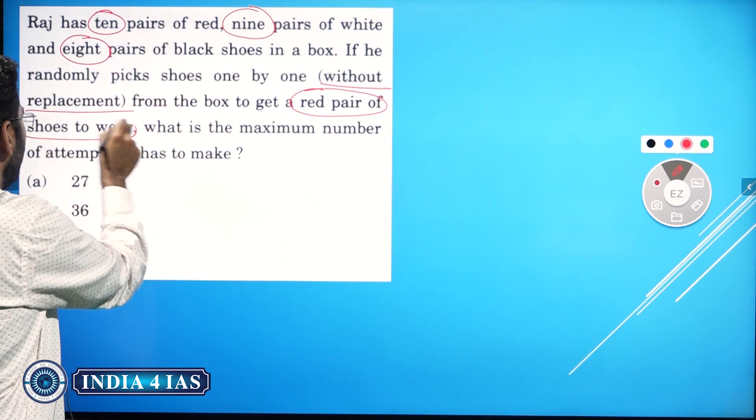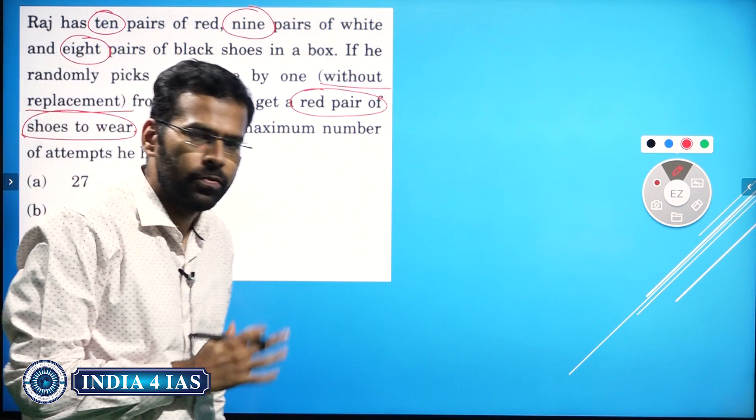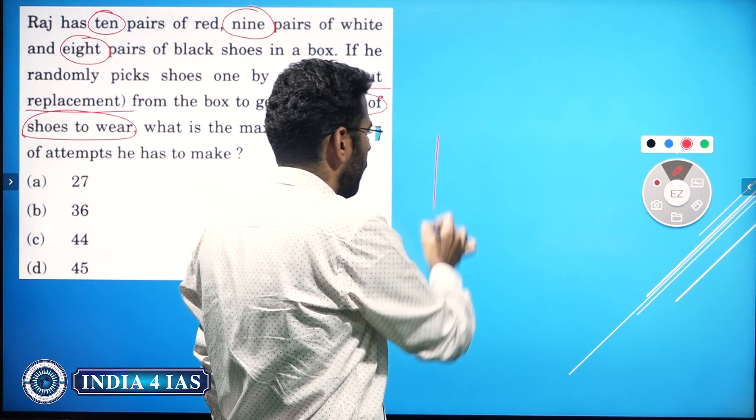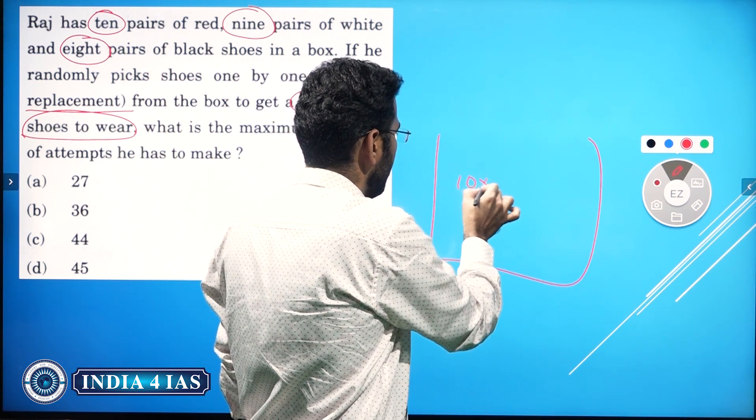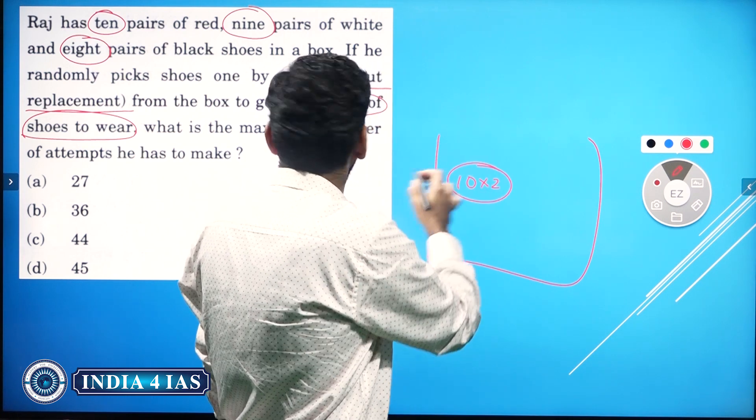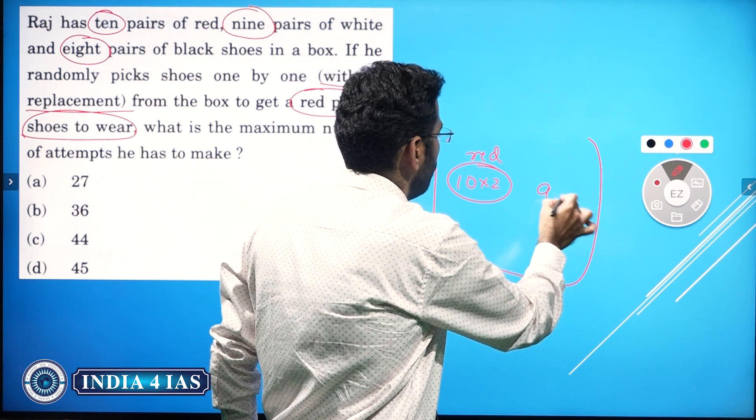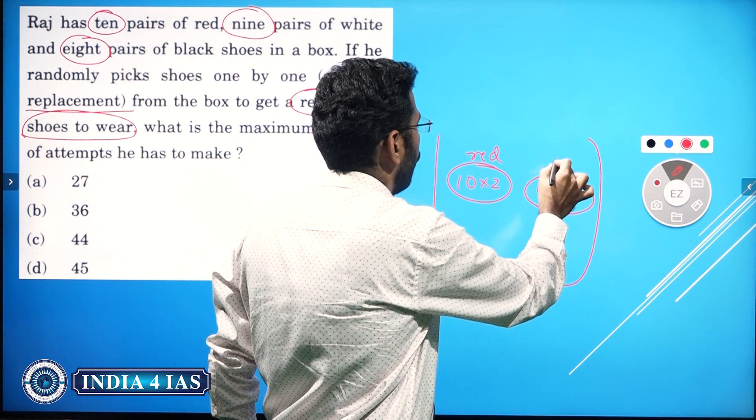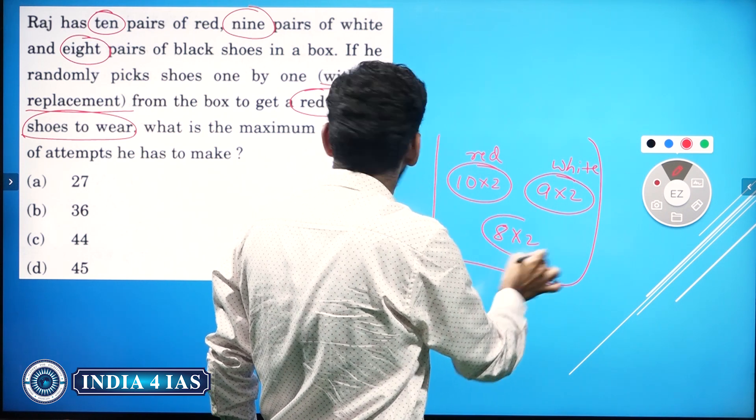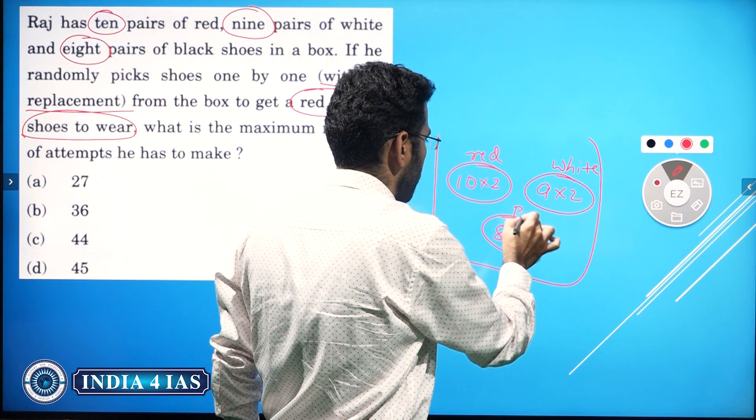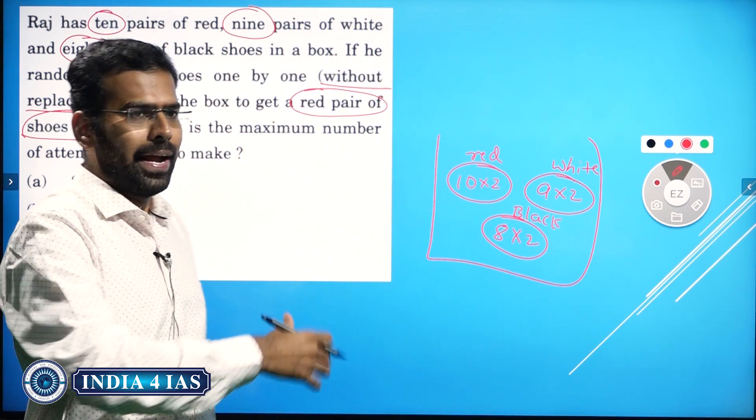For example, see, simply here in a box you have ten pairs - that means 10×2 shoes of red - and 9×2 of white, and 8×2 of which color? Black.